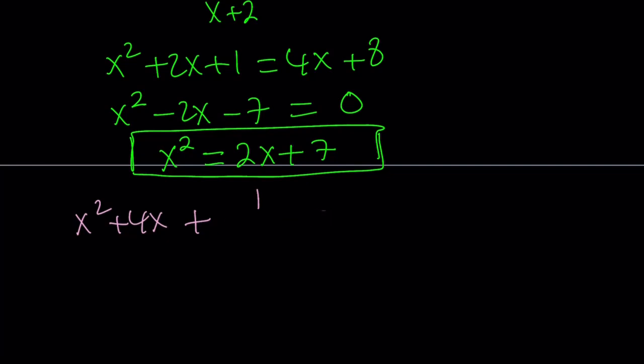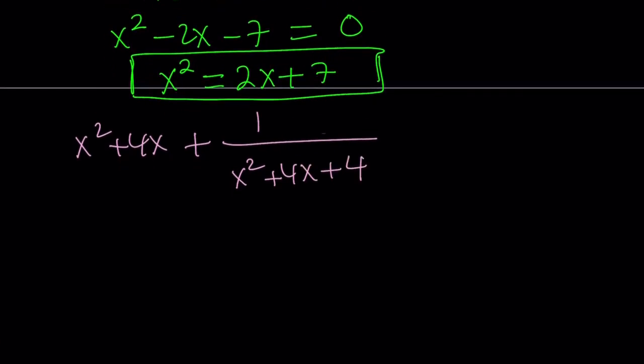So, now, we have (x+2)² here, but we can go ahead and expand it, right? And write it like this. So, this is the expression we're trying to evaluate. And then, now, we're going to replace x² with 2x + 7. Let's go ahead and do it.